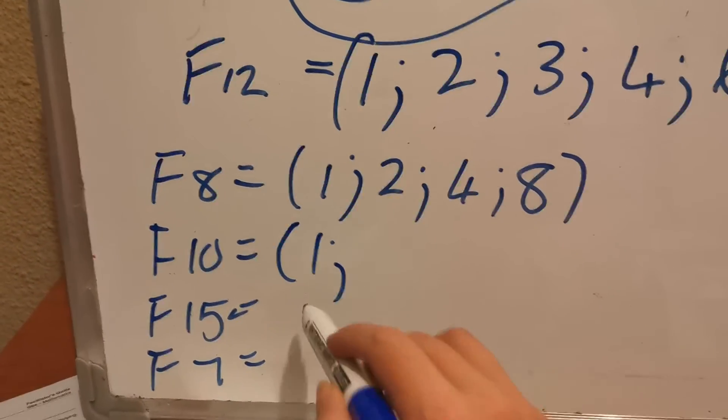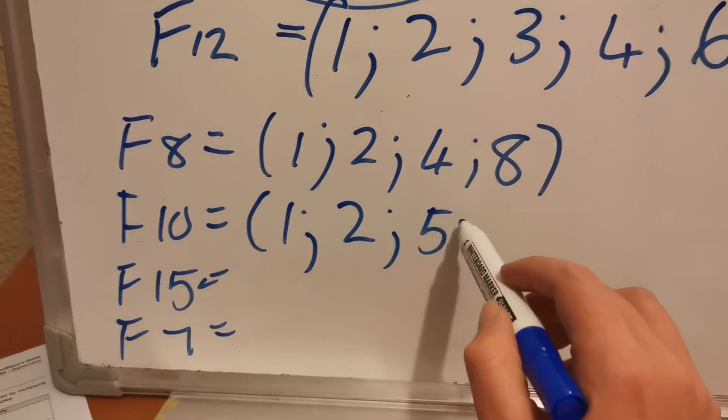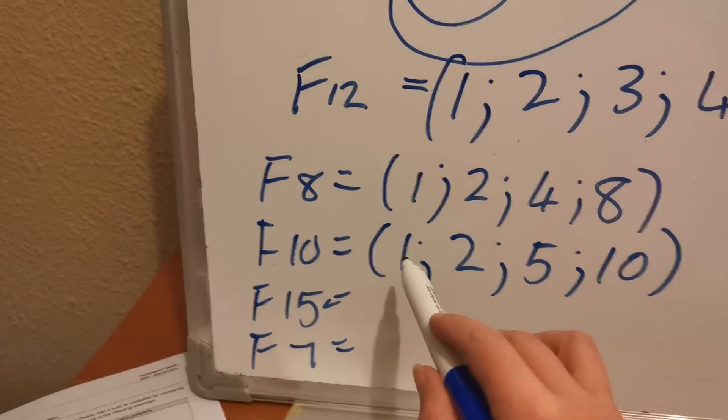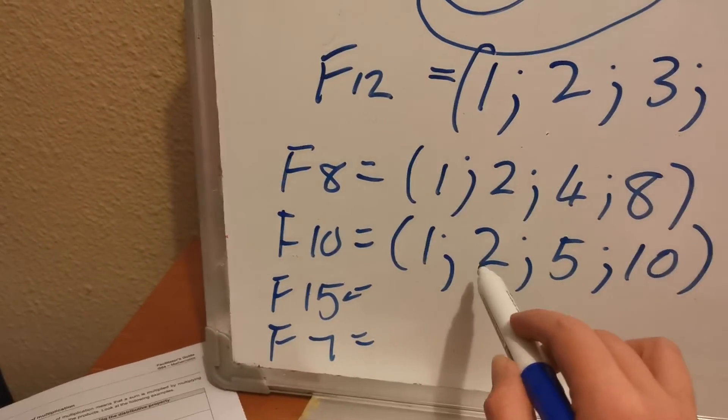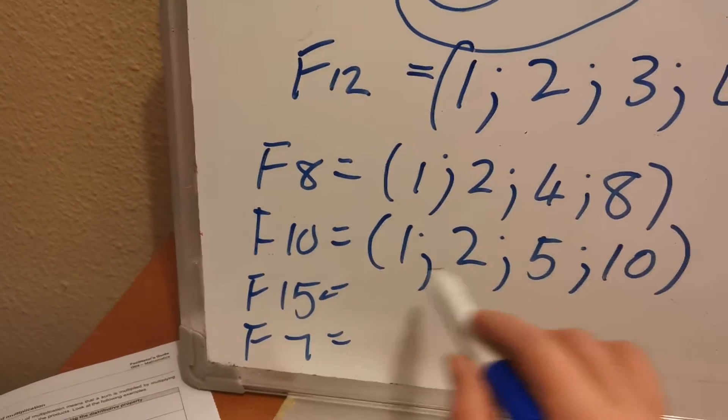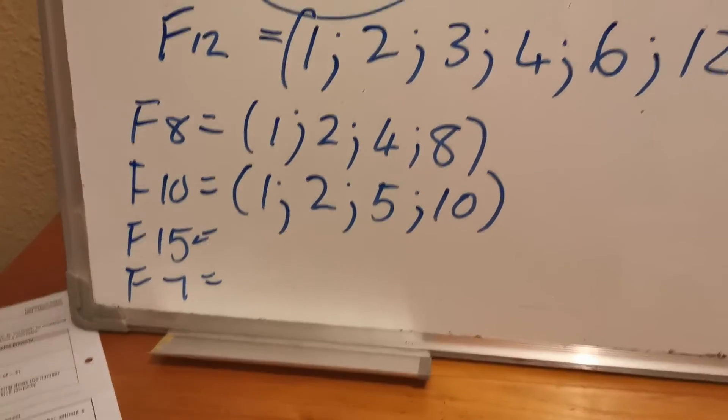For number 10 will be 1, 2, 5, 10. Because 10 divided by 1 is 10, 10 divided by 2 is 5, 10 divided by 5 is 2. So they don't give you any remainder.